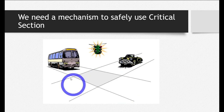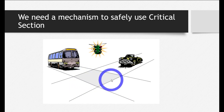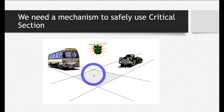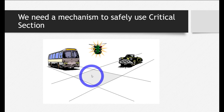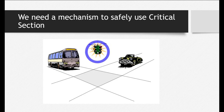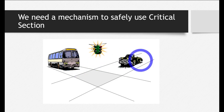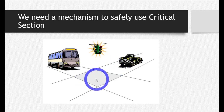Look at this image carefully. You can see there are two roads, and there is a common section in between them. If the traffic on one road has to travel, it must use this common section. Similarly, if the traffic on the other road has to move, it also needs to use this common section. Now imagine what will happen if there is no traffic signal — if both cars or buses from both roads start to use this common section at the same time. Obviously, an accident will happen.